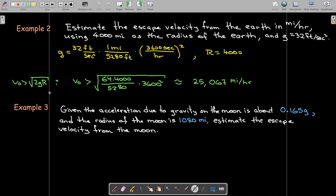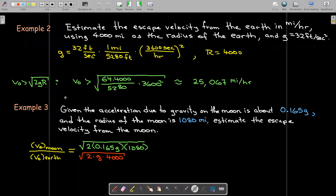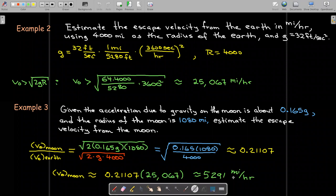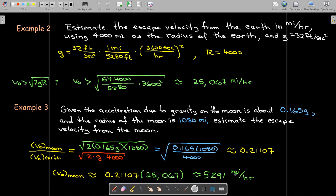Rather than going back directly to this formula and calculating a new g, which we could do, I'm going to look at this and say, well, what would be the ratio? If I calculate the ratio, I can do some algebra where the g's are going to divide out, the 2's are going to divide out. I'll just be left with the square root of 0.165 times the ratio of the radii of the Moon and the Earth—1,080 over 4,000. That's a little bit more than one-fifth. If I multiply that ratio times the escape velocity for the Earth, I get an escape velocity of around 5,291 miles per hour.